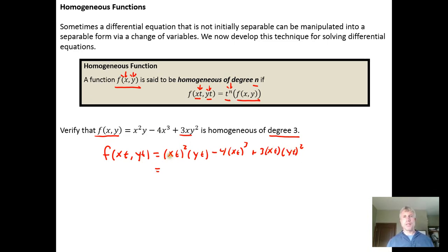Then we want to simplify things so we have x squared times y. We have t squared times t is t cubed minus 4. We have x cubed times t cubed plus 3x y squared times y squared. So we have xy squared and t times t squared is t cubed and then we want to notice that t cubed shows up in each of the three terms.